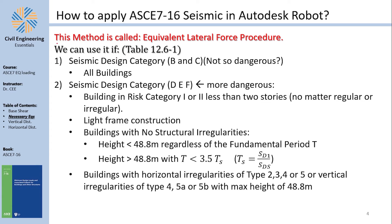The method is called the Equivalent Lateral Force Procedure. We are allowed to use it without any limitations if the building has a seismic design category of B or C. If the building falls in the more dangerous seismic categories D, E, or F, the method can still be used but with limitations.